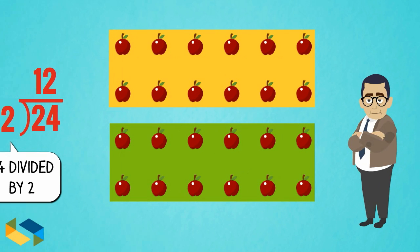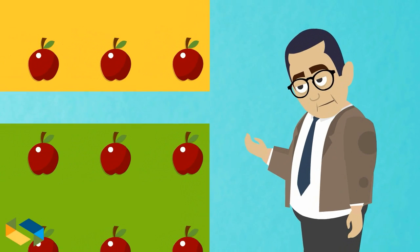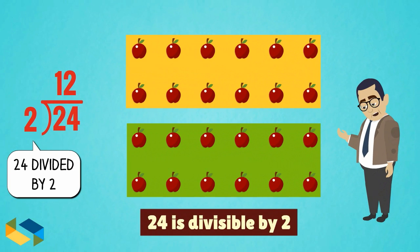In all these cases so far, we could divide the 24 apples in exact equal parts. So, as in this example, we can say 24 is divisible by 2.